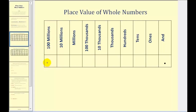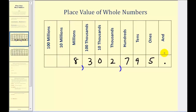One more thing: when writing large numbers, we separate the millions and the thousands with a comma, and the thousands and hundreds with a comma, to help keep the digits organized. Notice how in the place value chart I did include the decimal to the far right. Because we're not going to have any digits to the right of the decimal for whole numbers, we normally do not include the decimal point. But the reason I wanted to include it is the word 'and' is used to represent the decimal point.